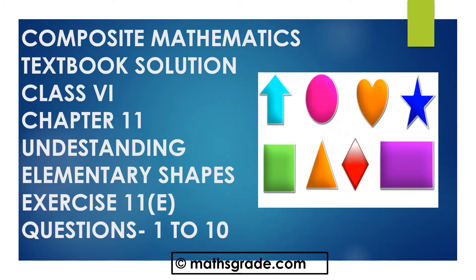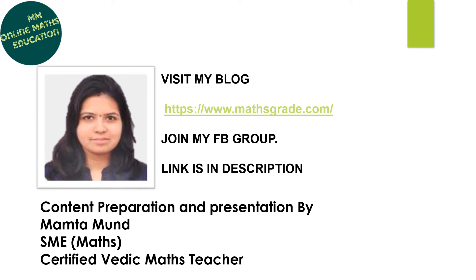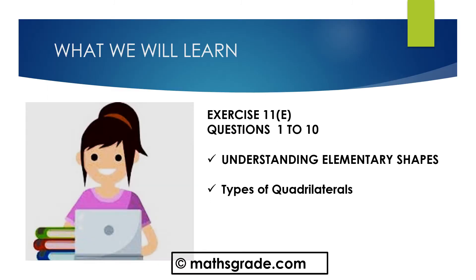Hello everyone, this is Mamakamund and today we will learn and solve questions 1 to 10 of exercise 11E, chapter 11. The chapter name is Understanding Elementary Shapes of class 6 of the composite mathematics textbook. The topic is types of quadrilaterals. Let's get started and solve some questions.